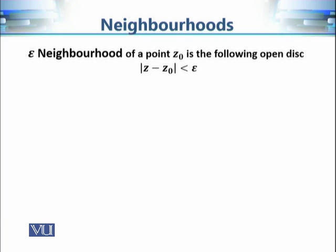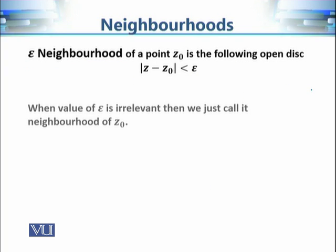Now let's define the neighborhood of a point z₀. As the name suggests, it is about the closeness of a point, and we will use this idea to explore how close a point is to a given region or set. The ε-neighborhood of a point z₀ is simply an open disk of radius ε — it includes all complex numbers whose distance from z₀ is strictly less than ε, and the boundary is not included. We will talk about a neighborhood when the specific value of ε is irrelevant.